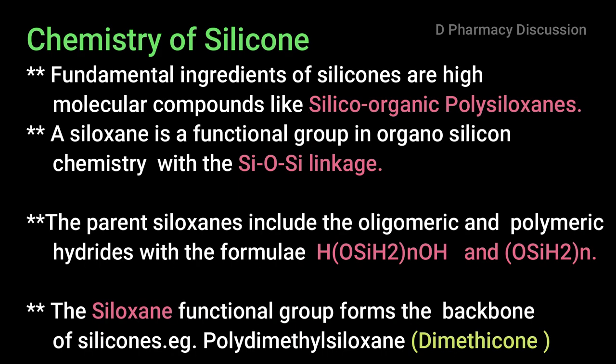The fundamental ingredients of silicones are high molecular compounds like silico-organic polysiloxanes. The siloxane is a fundamental group in organosilicon chemistry with Si-O-Si linkage. The parent siloxanes include the oligomeric and polymeric hydrides with the formulae HO(SiH₂)nOH and (OSiH₂)n. The siloxane functional group forms the backbone of silicones — for example, polydimethylsiloxane, the familiar dimethicone, which is used in most cosmetic products.